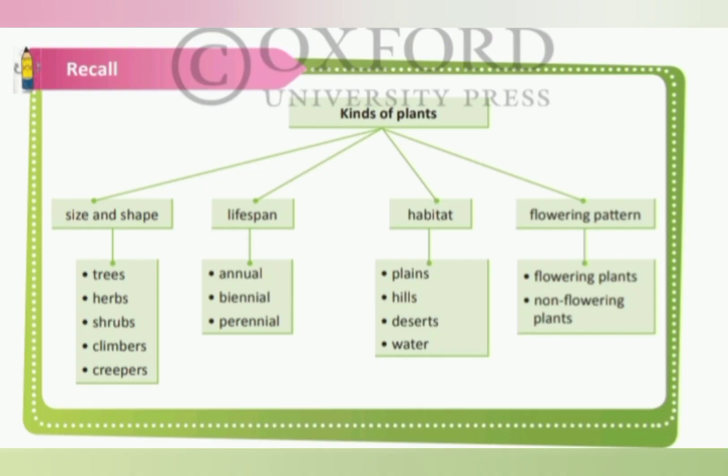Ok, dear students, let's recall kinds of plants. Size and shape: trees, herbs, shrubs, climbers and creepers. Lifespan: annual, biennial and perennial. Habitat: plains, hills, deserts and water. Flowering pattern: flowering plants and non-flowering plants.